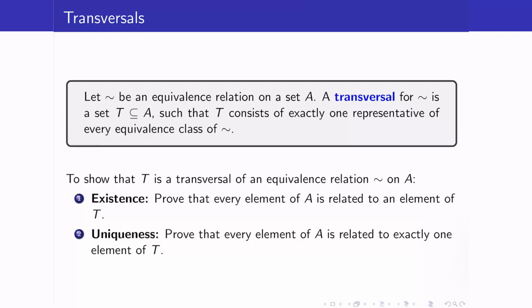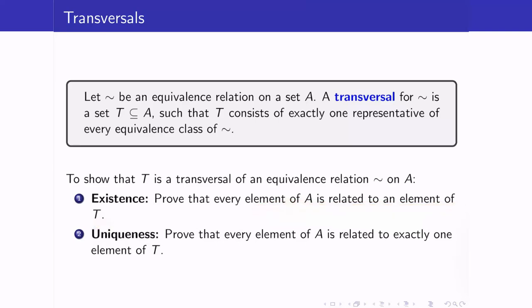From this definition, in order to show that a subset of A is a transversal of an equivalence relation, we have to prove two things. We have to prove existence and uniqueness. For the existence part, we have to show that every element of A is related to an element of T. Using quantifiers, we want to show that for all small a in capital A, there exists a T in capital T such that a is related to T. The definition says exactly one, so we want to show that this T is unique.